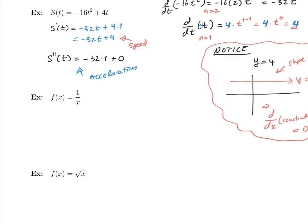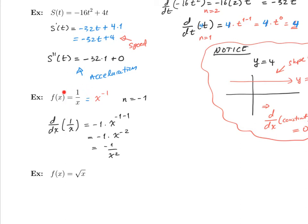So here we have f(x) equals 1 over x. It would be a lot more efficient to write it in this form: this is the same thing as x to the negative 1. So the value for n is negative 1. Therefore the derivative with respect to x of 1 over x is going to be minus 1 times x to the minus 1 minus 1, which equals minus 1 times x to the negative 2, which is minus 1 over x squared. We did this question the long way — you should check that this is exactly what we got.